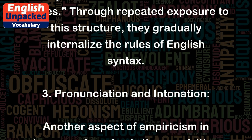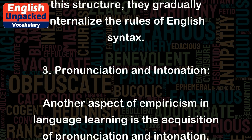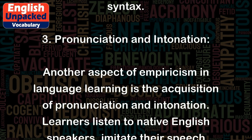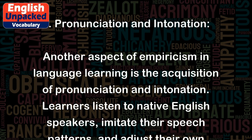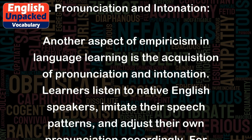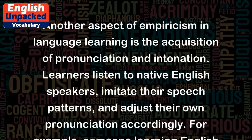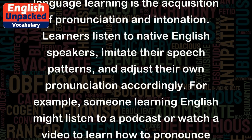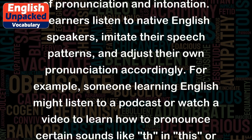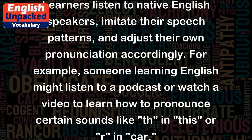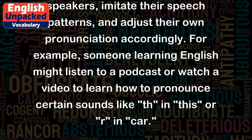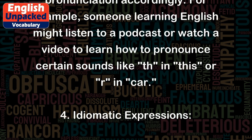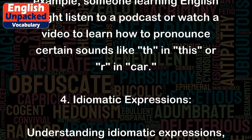3. Pronunciation and Intonation. Another aspect of empiricism in language learning is the acquisition of pronunciation and intonation. Learners listen to native English speakers, imitate their speech patterns, and adjust their own pronunciation accordingly. For example, someone learning English might listen to a podcast or watch a video to learn how to pronounce certain sounds like 'th' in 'this' or 'ar' in 'car'.